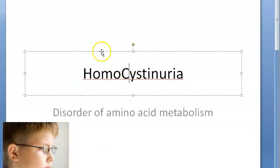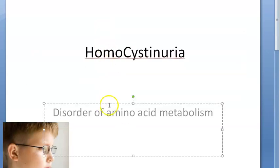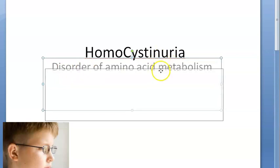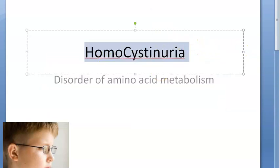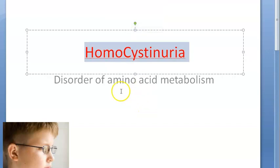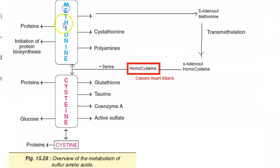In this video, let us look at homocystinuria, which is a disorder of amino acid metabolism. Homocystinuria means homocysteine is elevated in these people. Methionine gets converted to cysteine, and in between there is homocysteine.